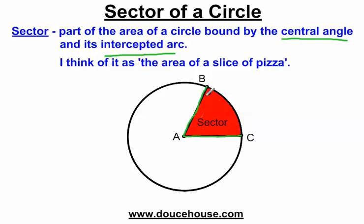The intercepted arc is the arc that this central angle creates. This central angle BAC is hitting the circle at B and at C, so the intercepted arc is the arc created between those two points around the circle. So the sector is part of the area of a circle bound by the central angle and the intercepted arc.